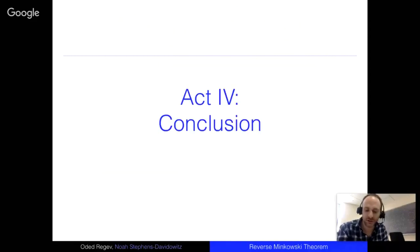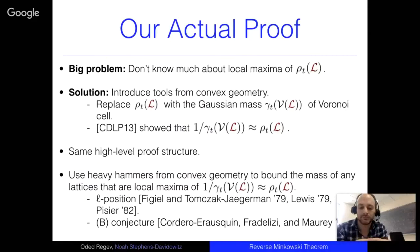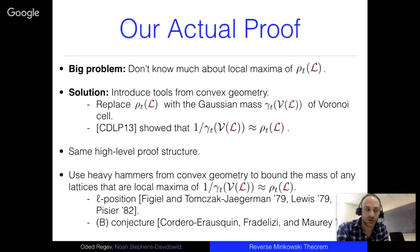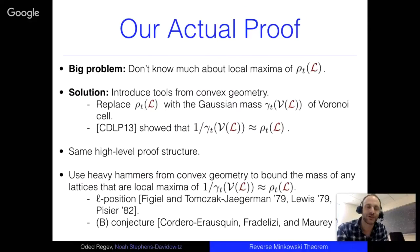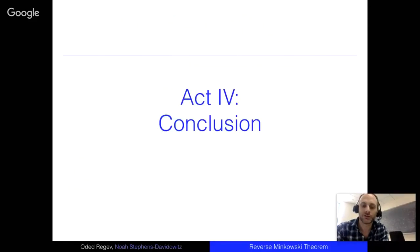Question: do the heavy hammers use the fact that the convex body is a Voronoi cell specifically, or are they generic? They are fully generic — these theorems apply to any convex body. We do use the Voronoi cell structure elsewhere in the proof, but these convex geometry theorems are completely general. They directly bound the Gaussian mass when you're at a local maximum, and combining the two theorems is fairly straightforward.